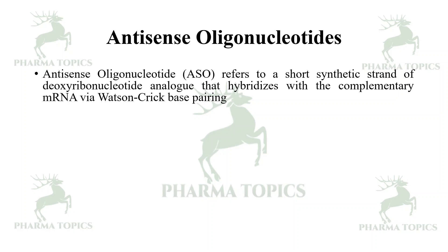What are antisense oligonucleotides? Antisense oligonucleotides refer to short synthetic strands of deoxyribonucleotide analogs that hybridize with complementary mRNA via Watson-Crick base pairing.